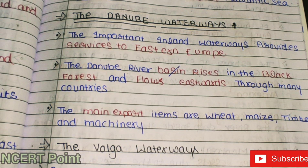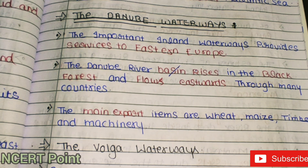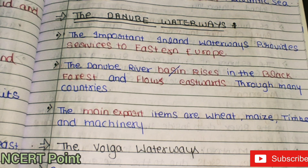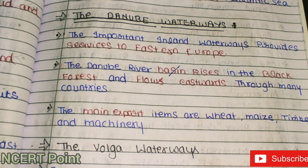The Danube Waterways provide important inland waterway services to Eastern Europe. The Danube River rises in the Black Forest and flows eastward through many countries. The main export items transported via this waterway are wheat, maize, timber, and machinery.